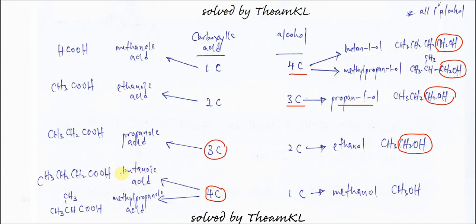For the four-carbon carboxylic acid, it could be butanoic acid or methylpropanoic acid — two options. The alcohol here is methanol, the one-carbon alcohol. Methanol reacts with butanoic acid to form one ester, and reacts with methylpropanoic acid to form another ester.